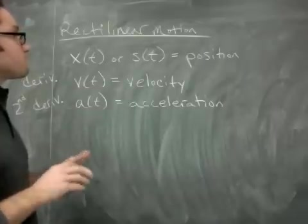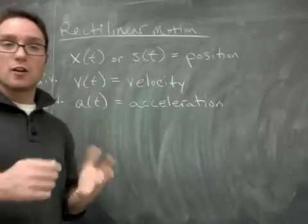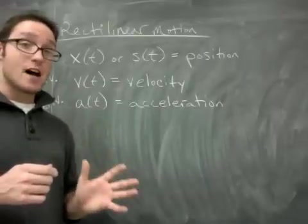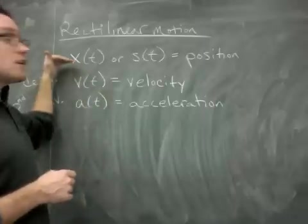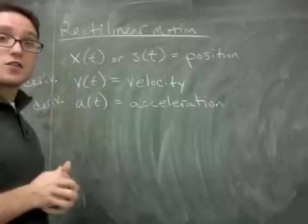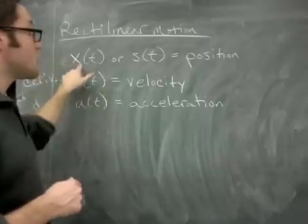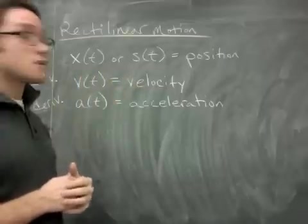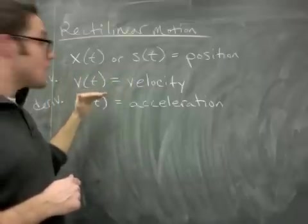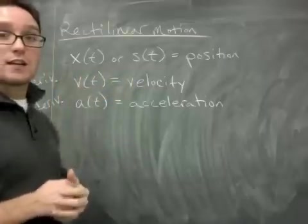So rectilinear motion is basically motion of a particle or some type of object with respect to time. What you're given is a position function. It's a function that tells you the position at any time. It's usually x(t) or s(t). That's position. From that, you can get the velocity and the acceleration, v(t) and a(t).